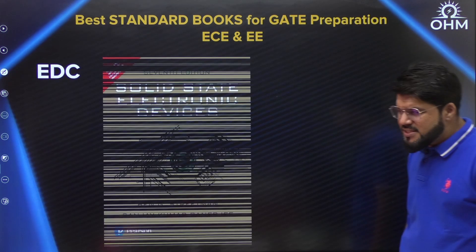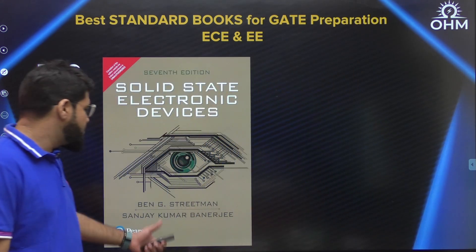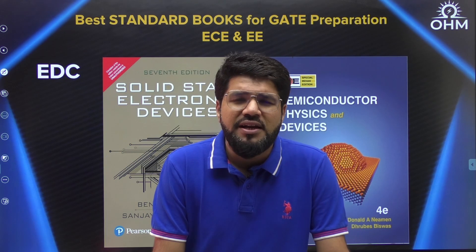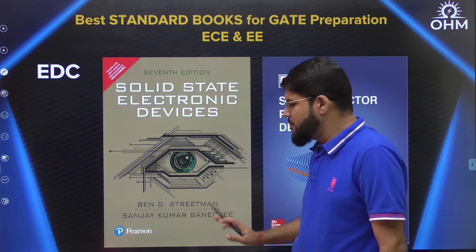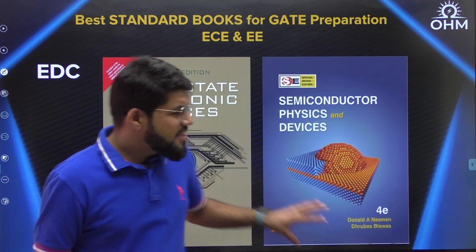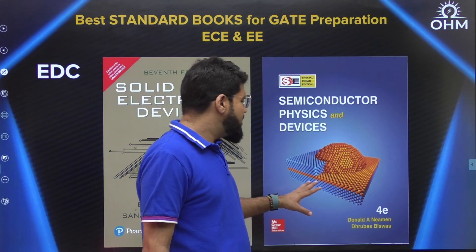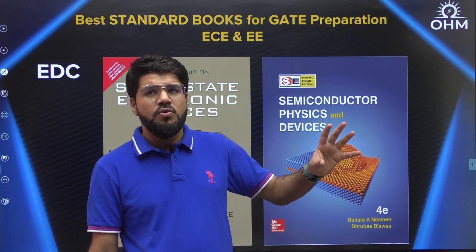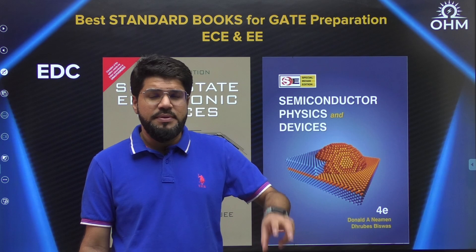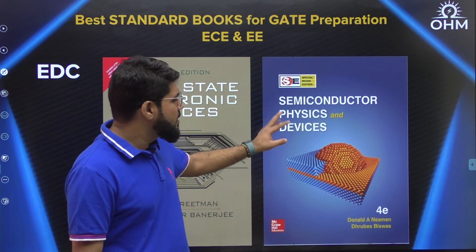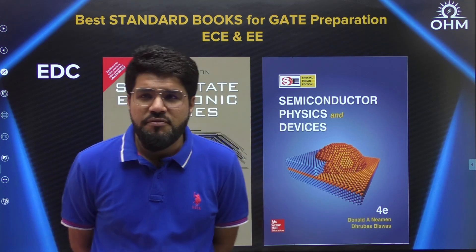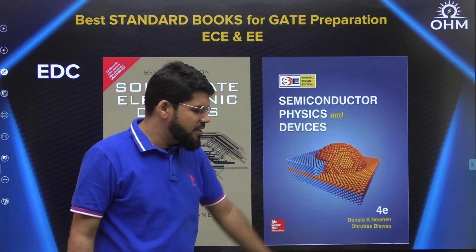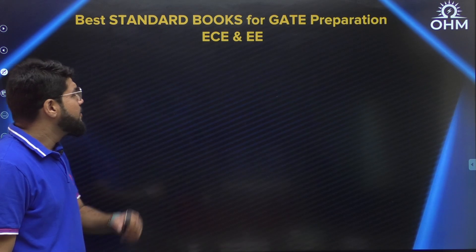Coming to EDC, I'll put two references. One is the book by Streetman and Banerjee, and another is the famous book Semiconductor Physics and Devices by Donald Neamen. If you want to start with fundamentals and basics, go for Streetman and Banerjee — it has relatively easy language. But if you really want a book whose problem level and content match what is expected in GATE, then Semiconductor Physics and Devices by Donald Neamen is what I prefer. The language may be slightly more difficult, but it's not a very big difference — if you can manage it, Donald Neamen will be the best one for EDC.